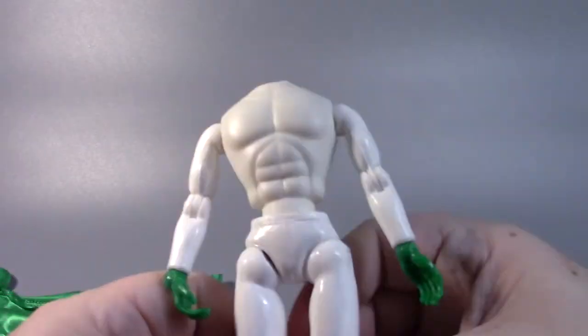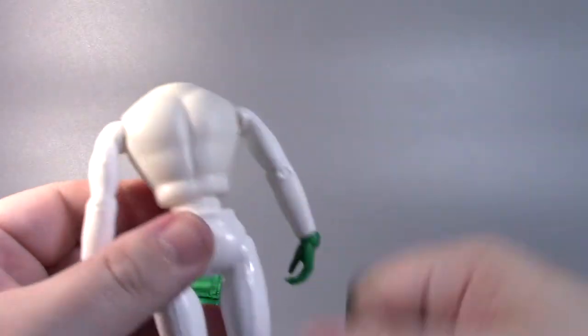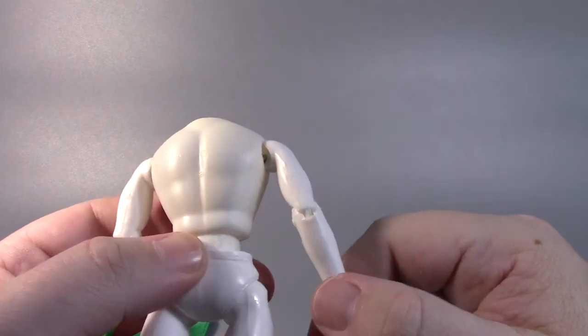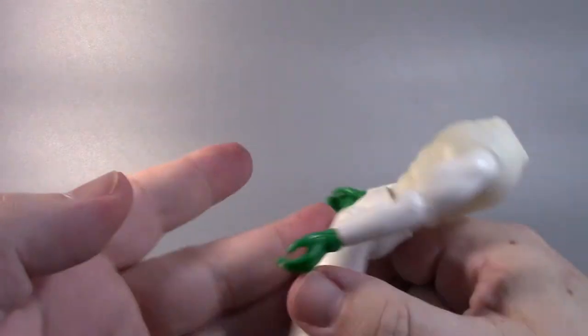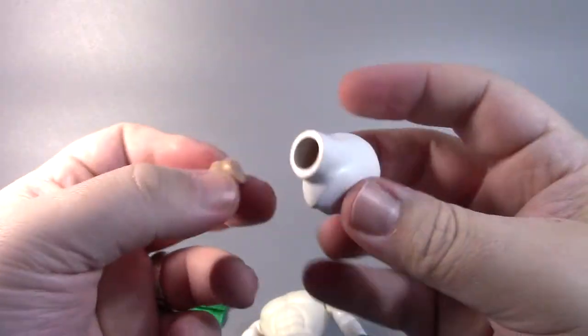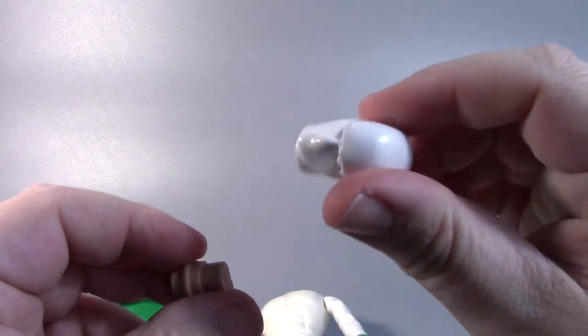Now, I will have to figure something out about putting the head on because this is not an S-type body. This is the old-school Figures Toy Company Mego style body that's got the elastics inside of it. It's gonna be a huge pain to put this head on there.